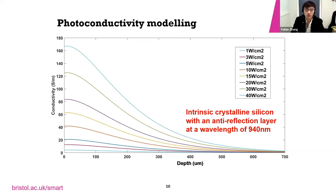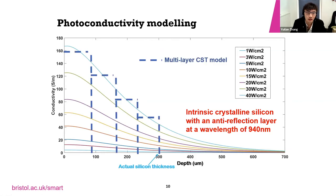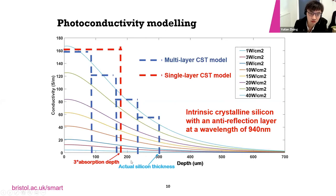Putting these into the drift-diffusion equations and solving gives an analytical solution for the excess carrier concentration, which further yields an expression for the photo conductivity. We plot this solution in MATLAB, showing a perfect longitudinal exponential decay of conductivity into the semiconductor depth at different intensity levels using intrinsic crystalline silicon at a wavelength of 940 nm. To interpret this in EM simulation software like CST, we can use either a complicated multi-layer model or a simpler single-layer model that is much more time-saving.